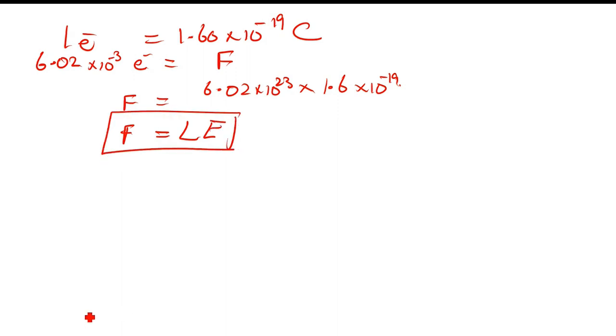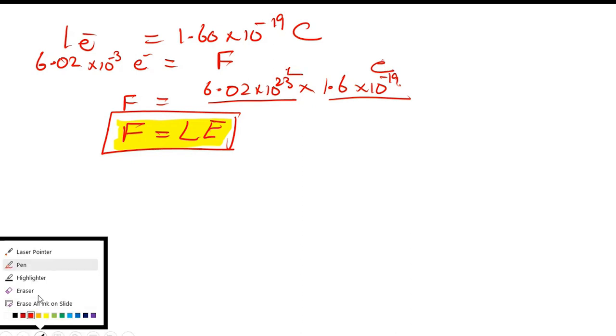So this is Avogadro's constant called L, and this is the constant called e. F is equal to L times e. We have to take care of this equation.